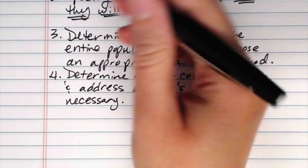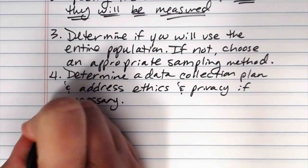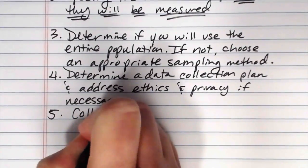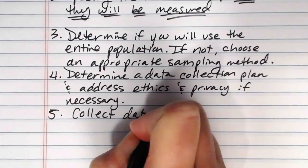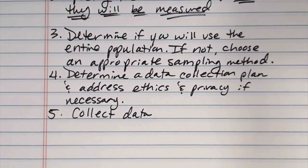So all of this is just pre-planning stuff up to step four. Step five, we actually collect the data. That's where we actually go out and we enact our data collection plan. We go and gather it.